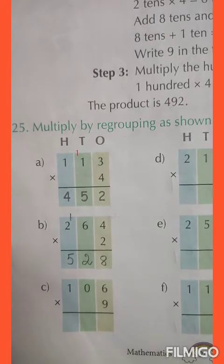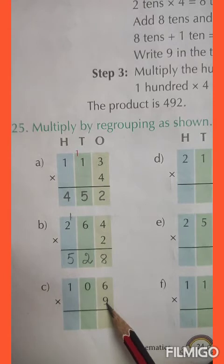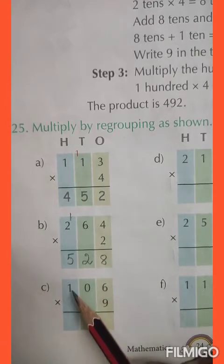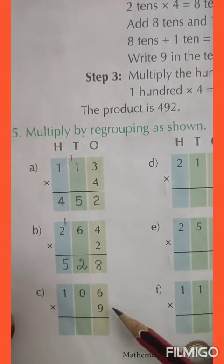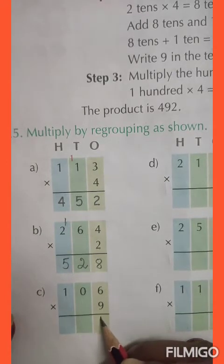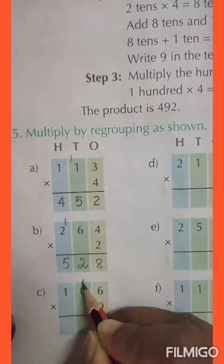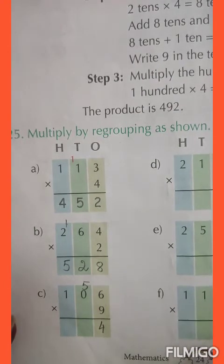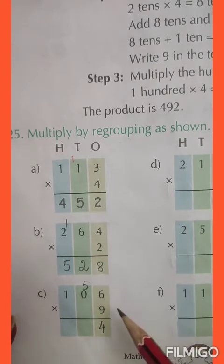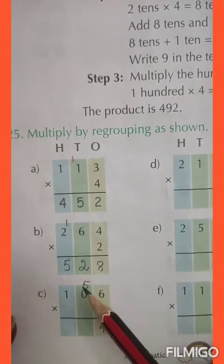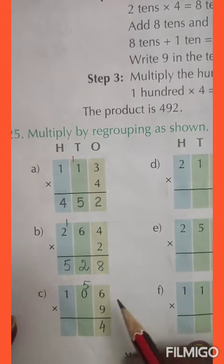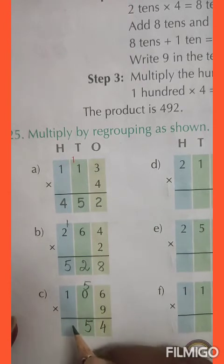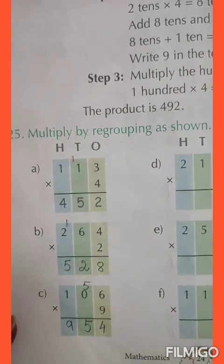Question number C: 9 into 6, then 9 into 0, and then 9 into 1. 9 sixes are 54, so I will write 4 and 5 will be carried over. 9 zeros are 0 — anything multiplied by 0 is always 0 — but 0 plus 5 will be 5. And 9 ones are 9. The answer is 954.